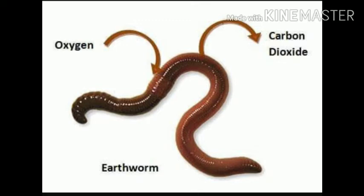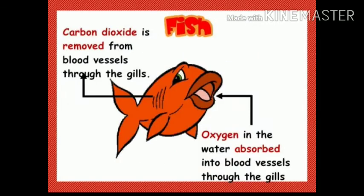Some animals like earthworms take in oxygen through the thin moist skin. Fish breathe through gills. Aquatic animals like prawns, crabs, oysters, and tadpoles also breathe through gills — special organs richly supplied with blood vessels. When water flows over the gills, an exchange of gases takes place; gills absorb oxygen from the water and release carbon dioxide.